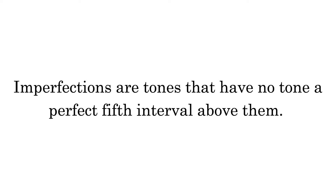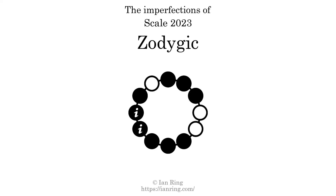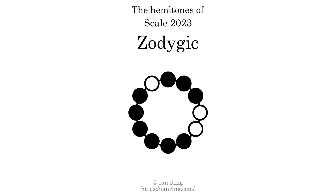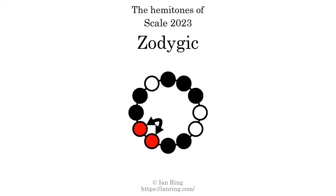Imperfections are tones that have no tone a perfect fifth interval above them. This scale has two imperfections. Hemitones are instances where two tones in the scale are a semitone apart. This scale has seven hemitones, at the indicated positions.